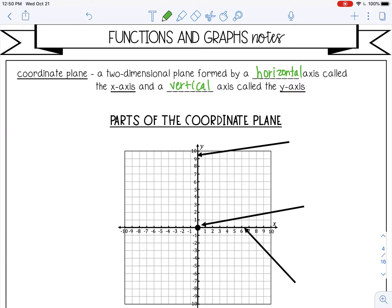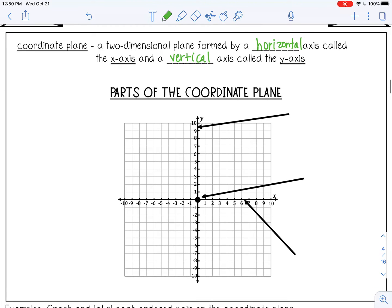Let's label these parts of the coordinate plane. This vertical axis is my y-axis. The horizontal axis is my x-axis. The middle zero zero is called the origin.